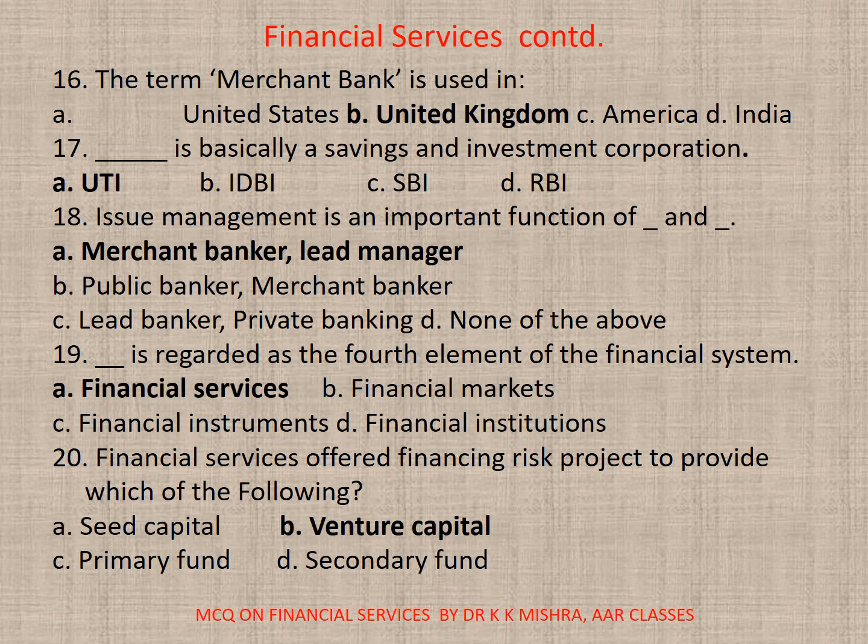Question 19. This is regarded as the fourth element of the financial system. A. Financial services. B. Financial markets. C. Financial instruments. D. Financial institutions. Correct option is A. Financial services.